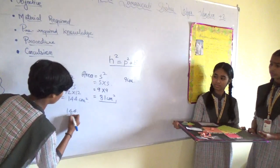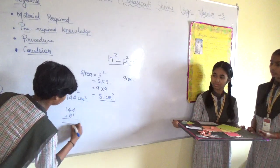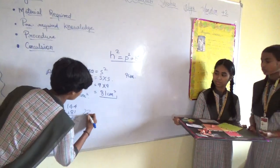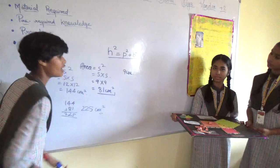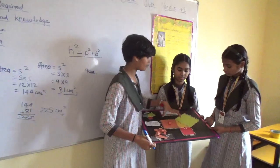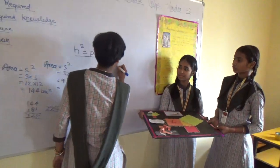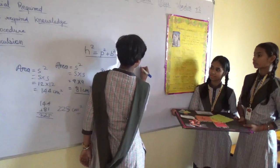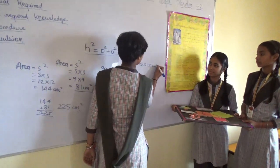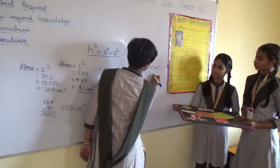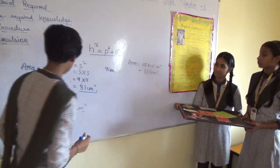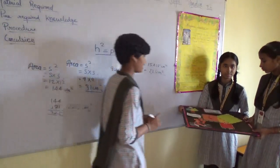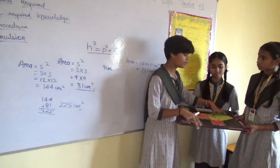We will add them: 144 plus 81 equals 225 cm squared. So this value is equal. We can say that the area of the base square and perpendicular square, when we add them, it will be equal to the hypotenuse square.